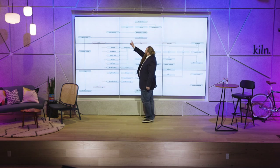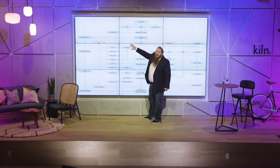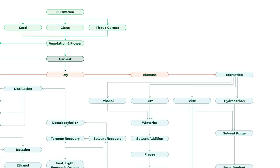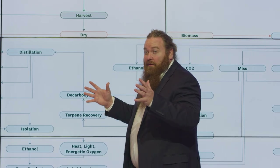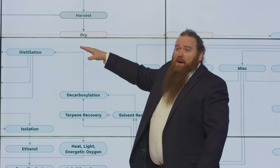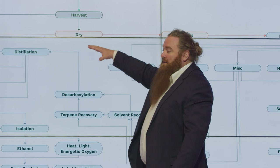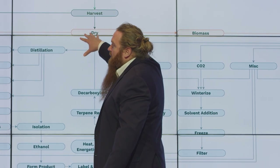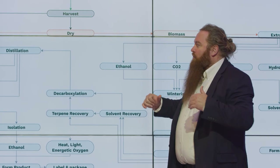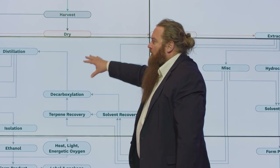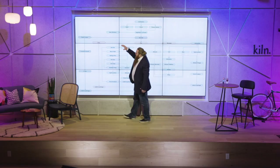From there you can label and package. You also get the flower that's going to be smoked. What you don't use as flower goes into biomass. Biomass involves drying it down — you want about 0.65 water activity, which is the ideal level. If it's too dry it won't be pleasant, because you'll lose terpenes. You evolve terpenes when you dry it too much. We'll talk more about terpene recovery shortly.